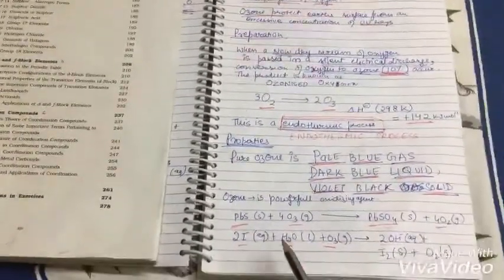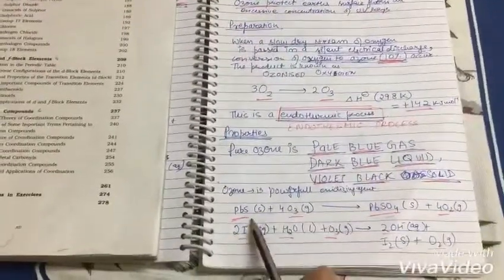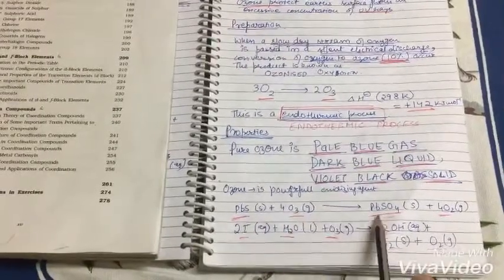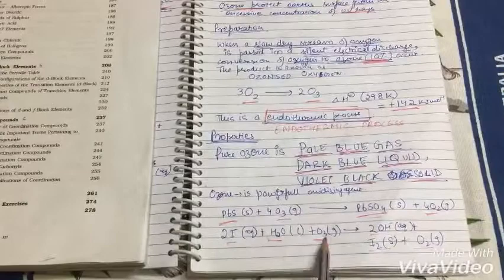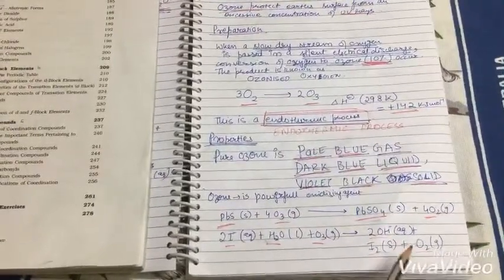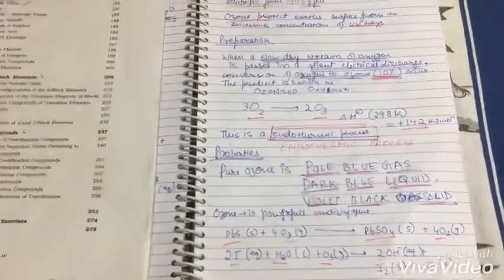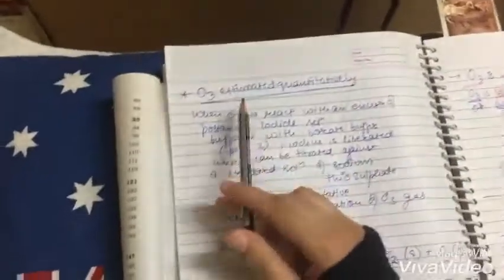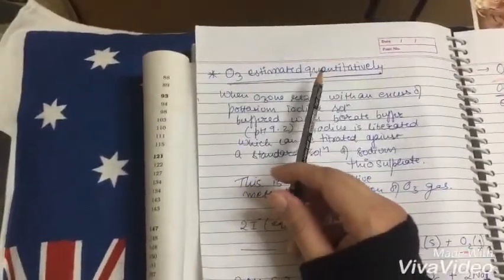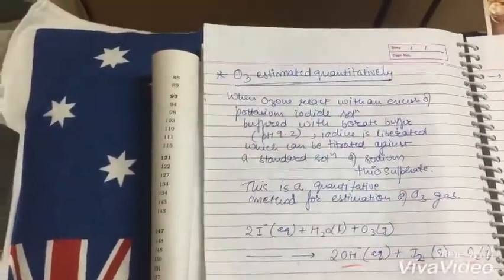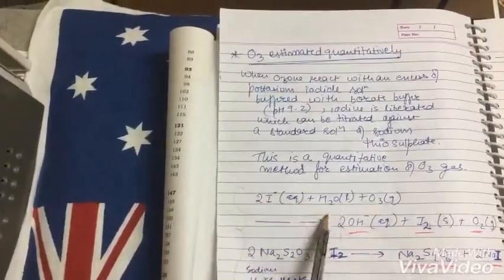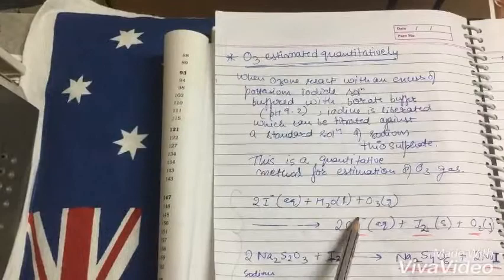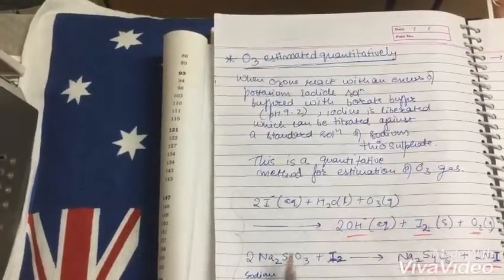Then we have ozone is powerful oxidizing agent. PBS plus O3 will be PBSO4 plus O2. I plus water plus O3 will be OH minus I2 plus O2. Then O3 is estimated quantitatively. This is the equation: I plus water plus O3 gives us OH minus plus I2 plus O2.